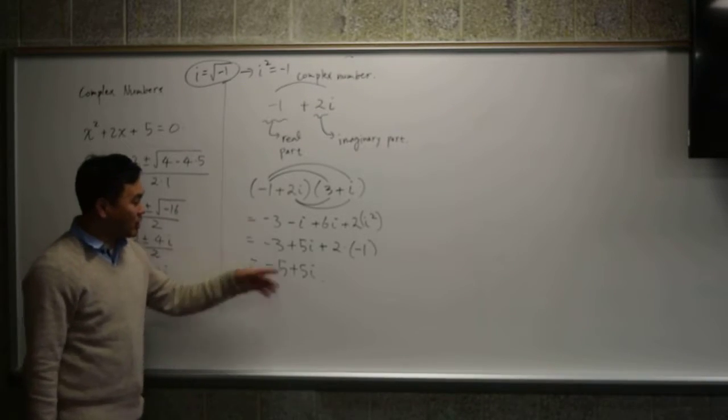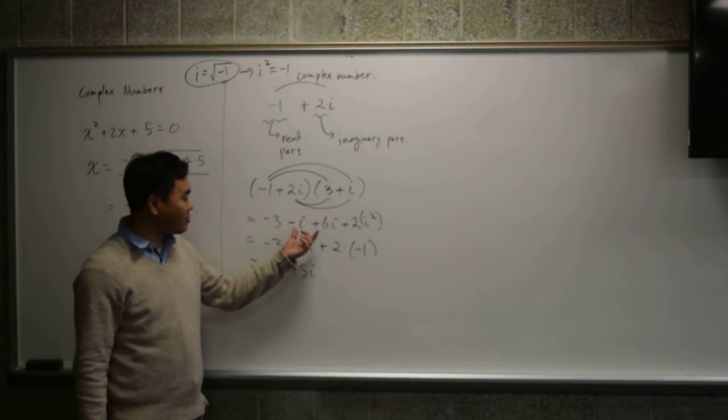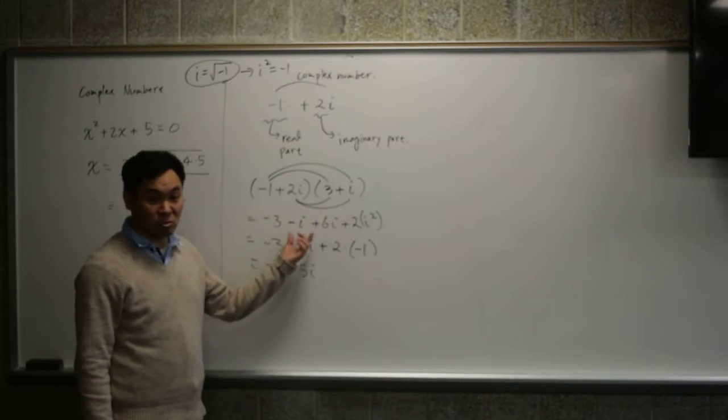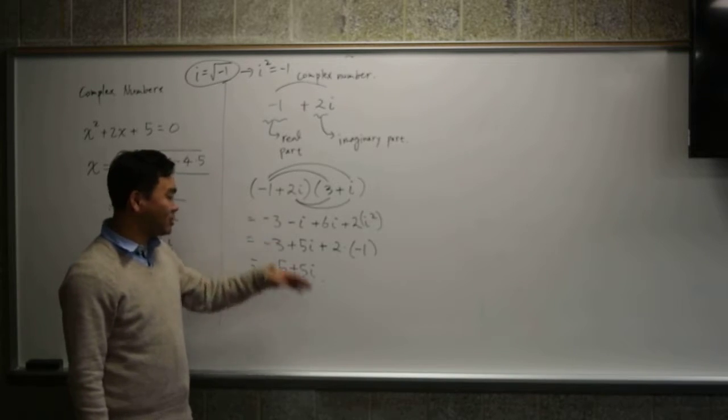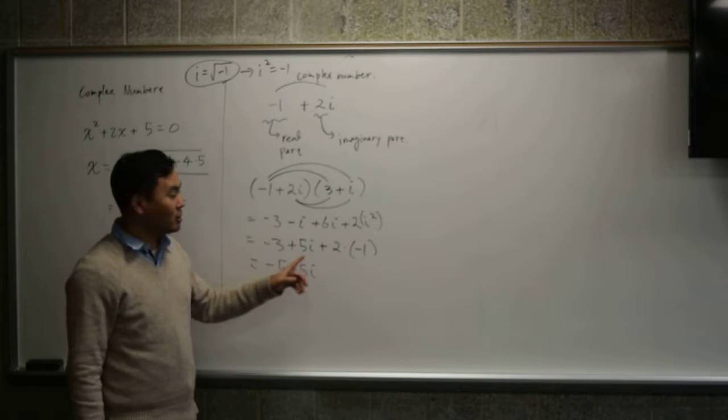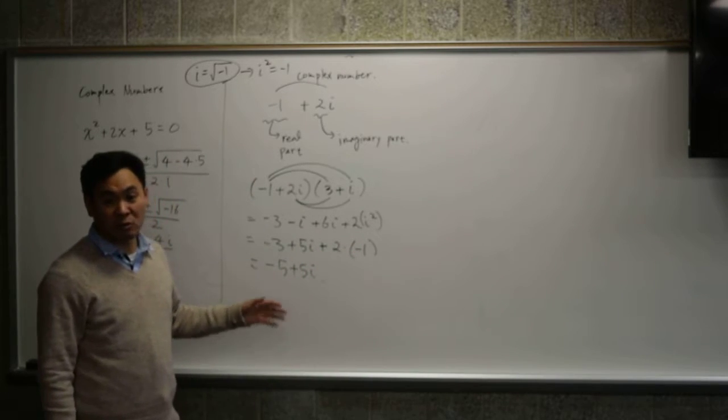And while doing that, you probably noticed that I combined negative i and 6i to 5i. That's how you add the imaginary numbers. So, I mean, other than the fact that i² is negative 1, all the regular rules of algebra apply. Okay?